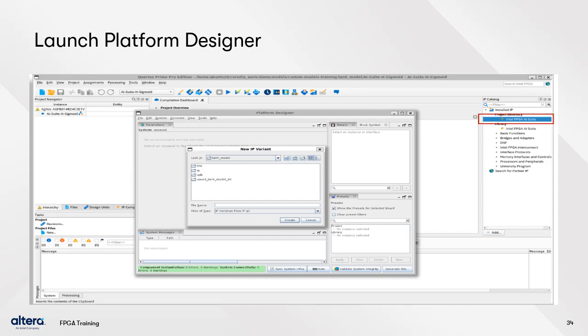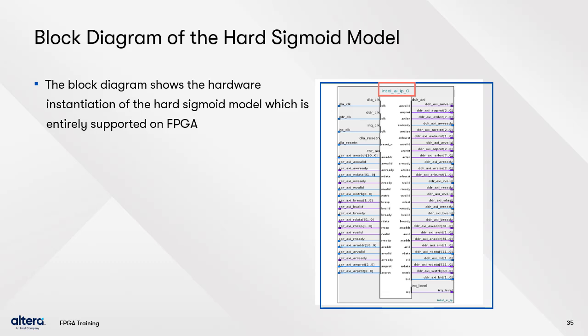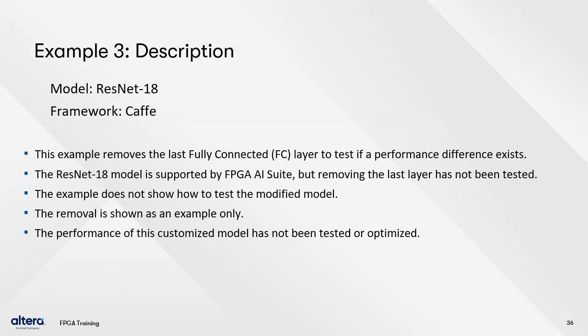Open Quartus Prime design software and navigate to the Tools menu, then select Options to add the newly created IP to the IP catalog. Once both files are added, click OK. You can then see the IP in the IP catalog; double-click on it to launch Platform Designer and add it to your Quartus Prime project for both the TanH and hard sigmoid models. The block diagram shows the hardware instantiation of the hard sigmoid model, which is entirely supported on FPGA.